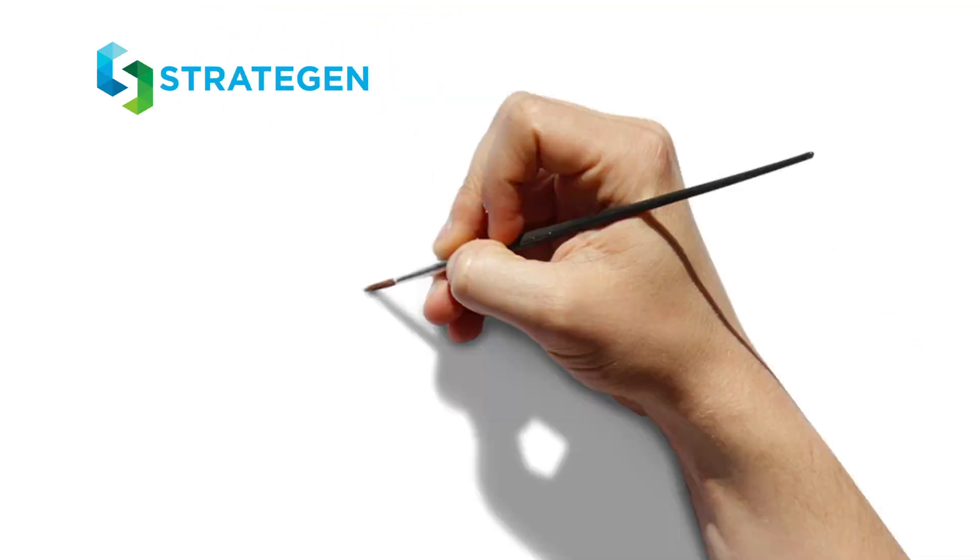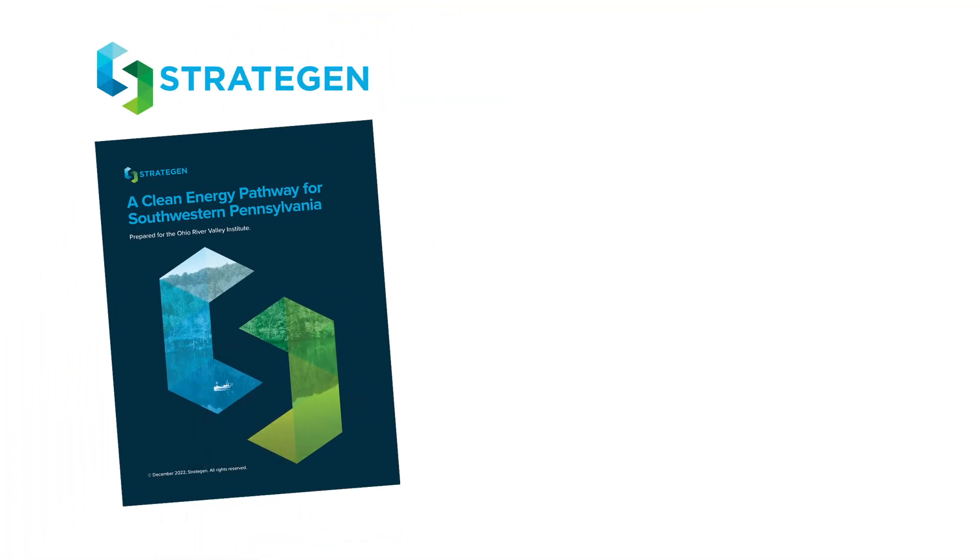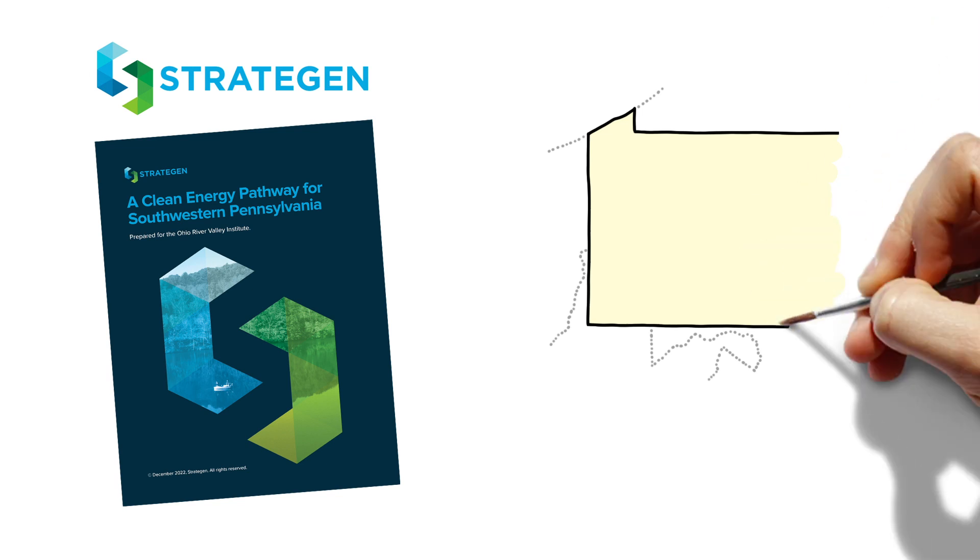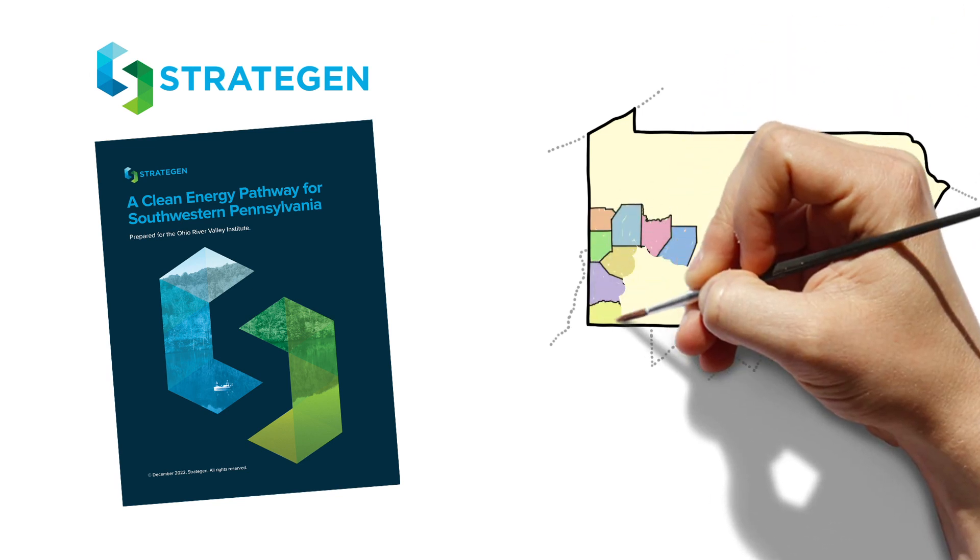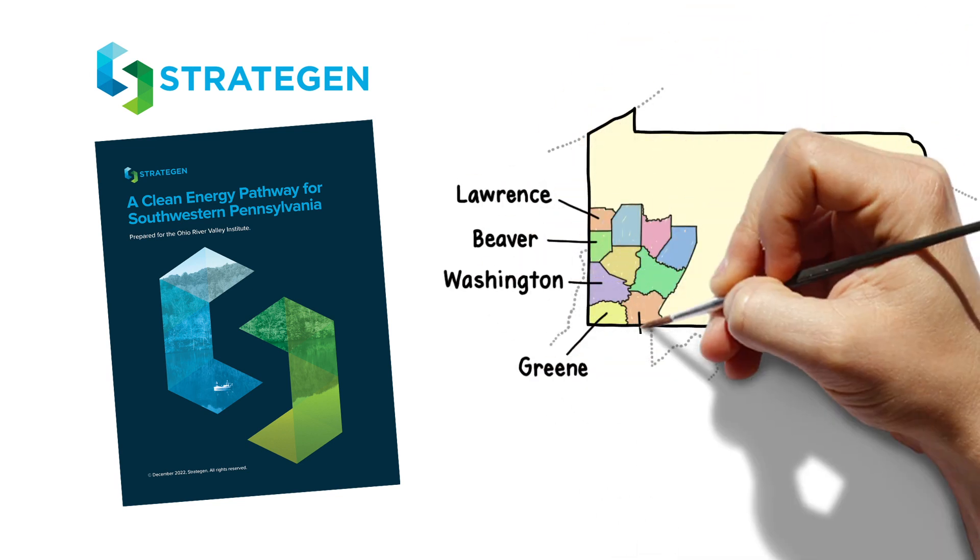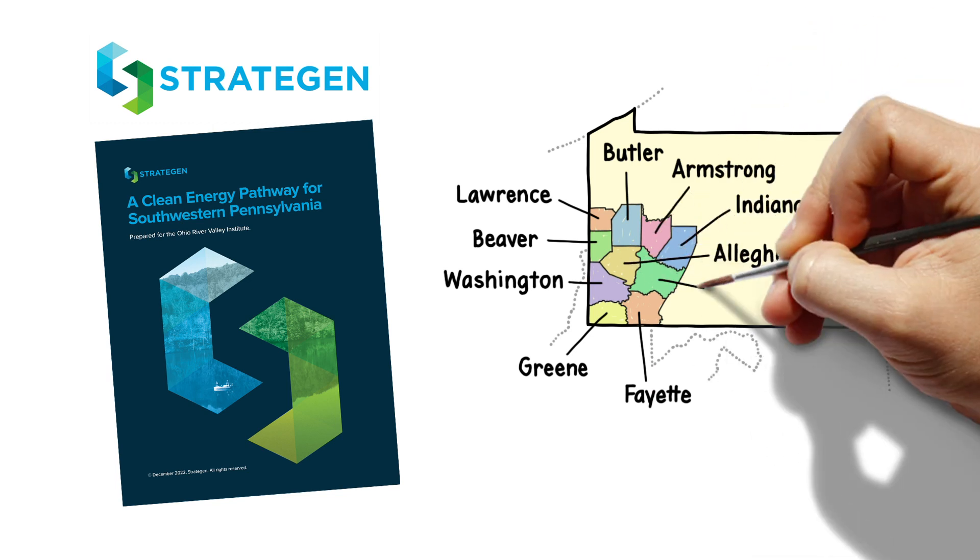That's why the Ohio River Valley Institute commissioned the analytics firm Stratagen to create a new report describing what a clean energy decarbonization pathway could look like for southwestern Pennsylvania.